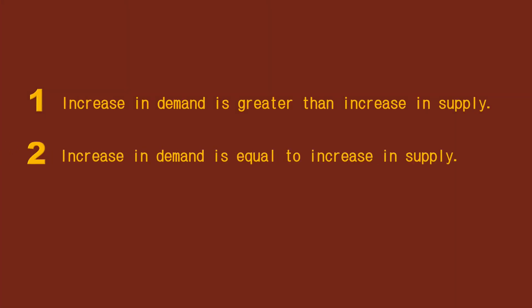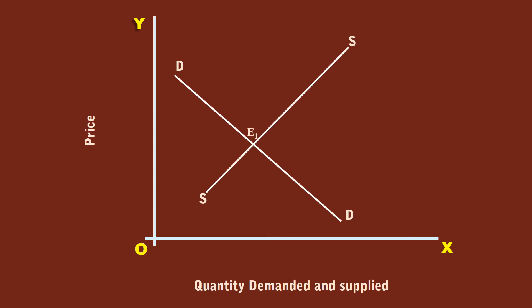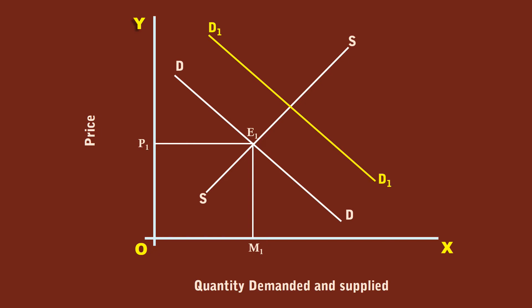Case 2: Increase in demand is equal to increase in supply. The initial equilibrium is E1, equilibrium price is P1, and equilibrium quantity is M1. The demand increases and the new demand curve is D1D1; the buyers move to the new demand curve. There arises an excess demand of E1 to E2. At the existing price P1, they want to buy E2 units. The sellers respond quickly by increasing the supply and meet the demand in full.